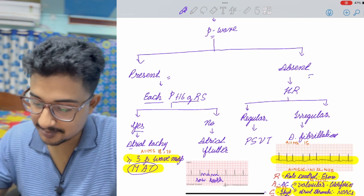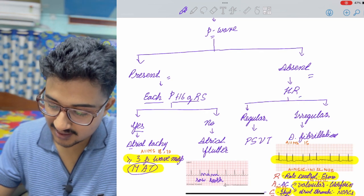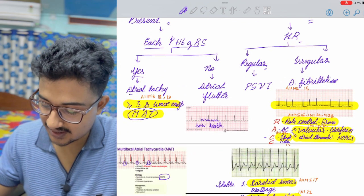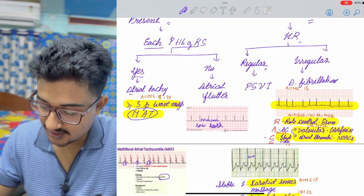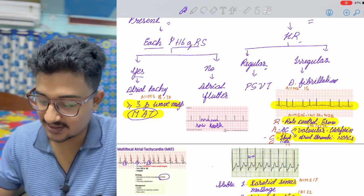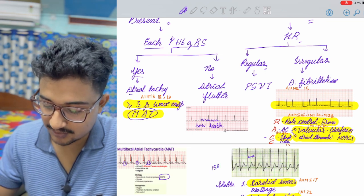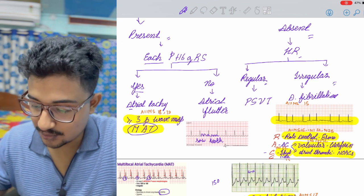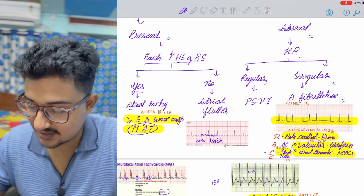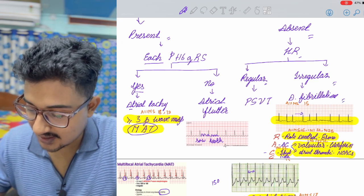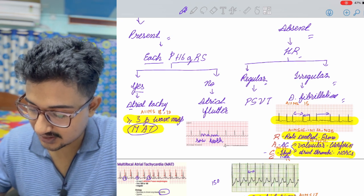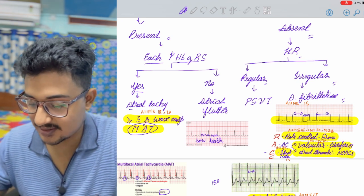If the P wave is absent and heart rate is regular, then it is a case of PSVT. You can see regular interval, two large squares, that means a rate of about 150 beats per minute. But in case if it is irregular, then it is AFib, atrial fibrillation. See the RR interval is variable. So the heart rate is also variable. Here you see the RR interval, it is much larger.